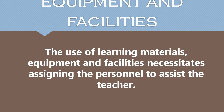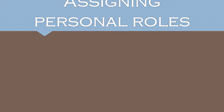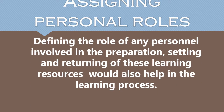Selecting materials, equipment, and facilities. The use of learning materials, equipment, and facilities necessitates assigning personnel to assist the teacher. Assigning personal roles: defining the role of any personnel involved in the preparation, setting, and returning of these learning resources would also help in the learning process. In this way, all the personnel involved will have a definite action plan — a definite task that they need to do, hence helping the learning process.